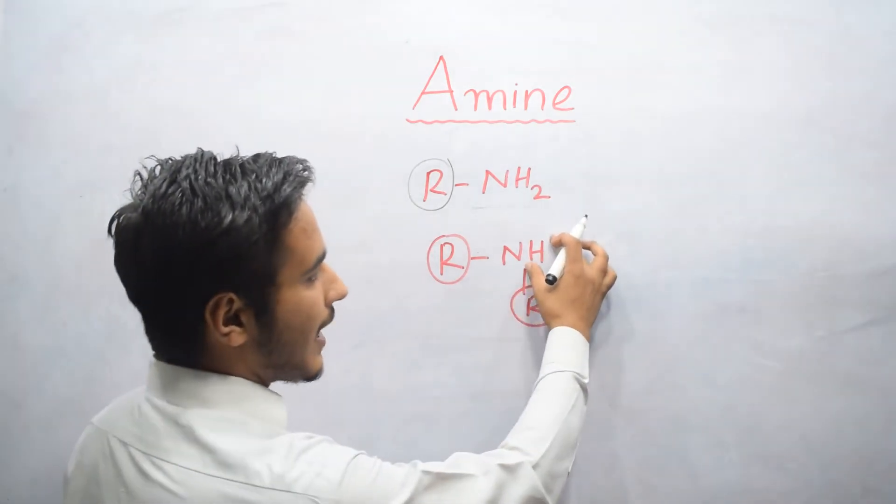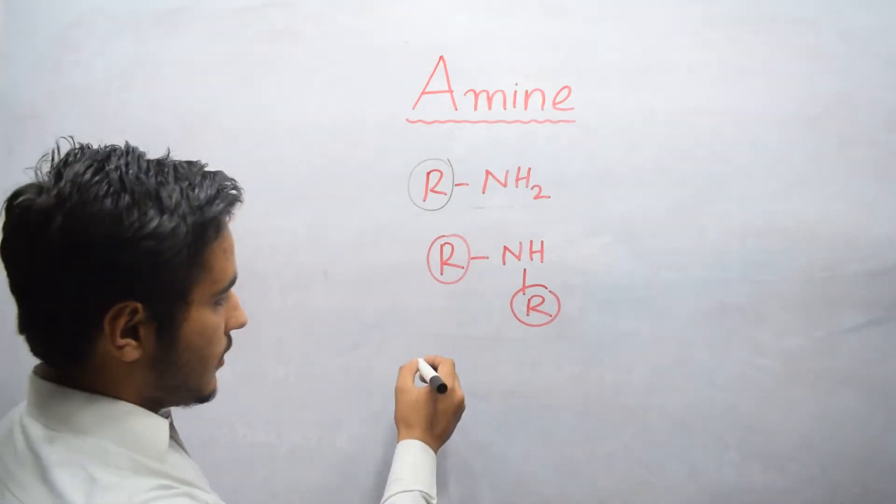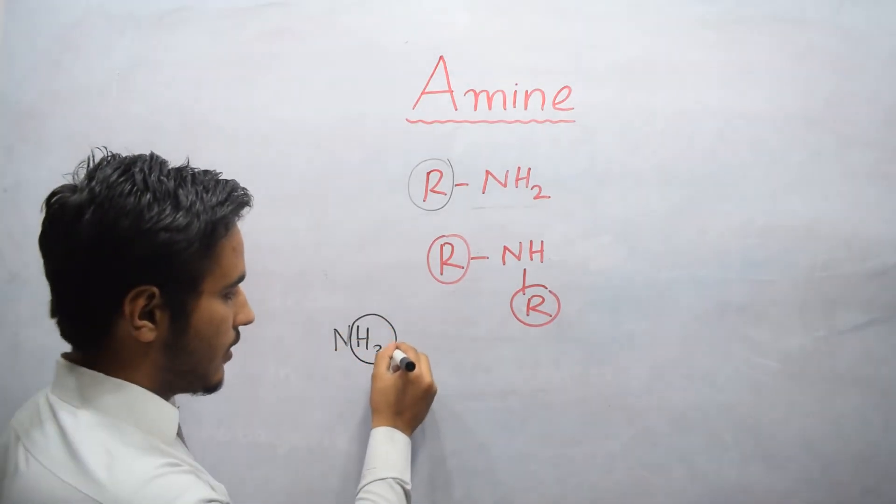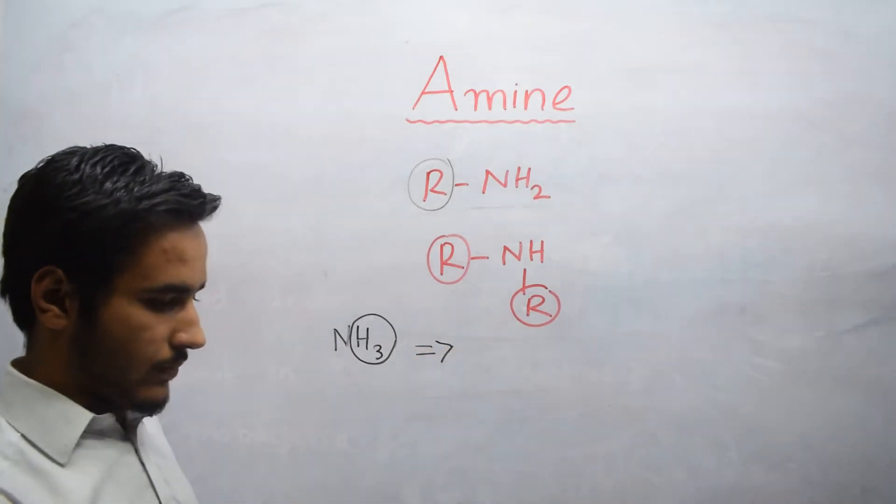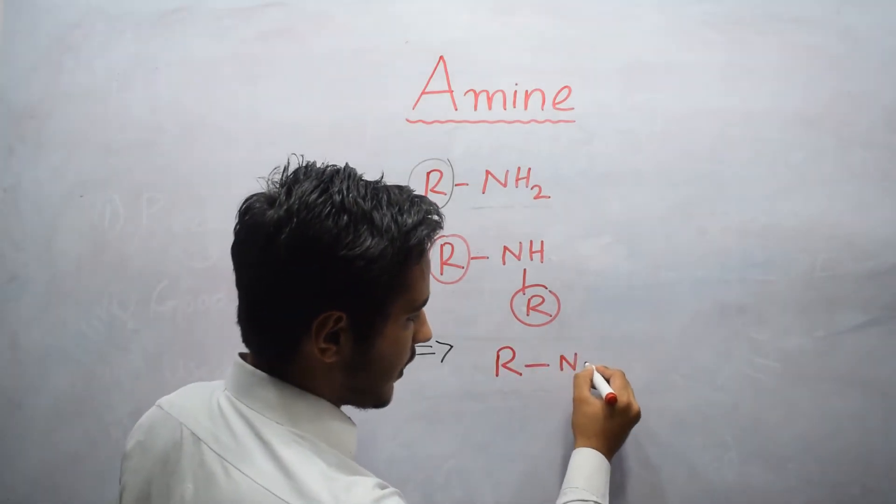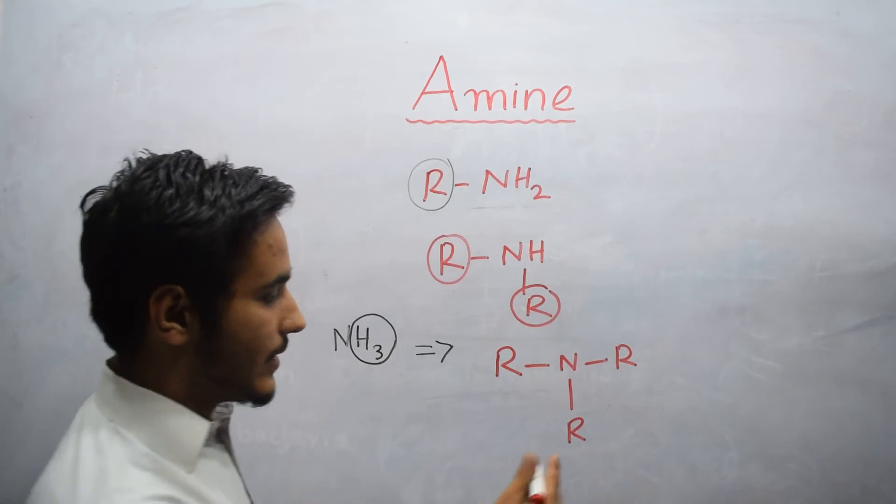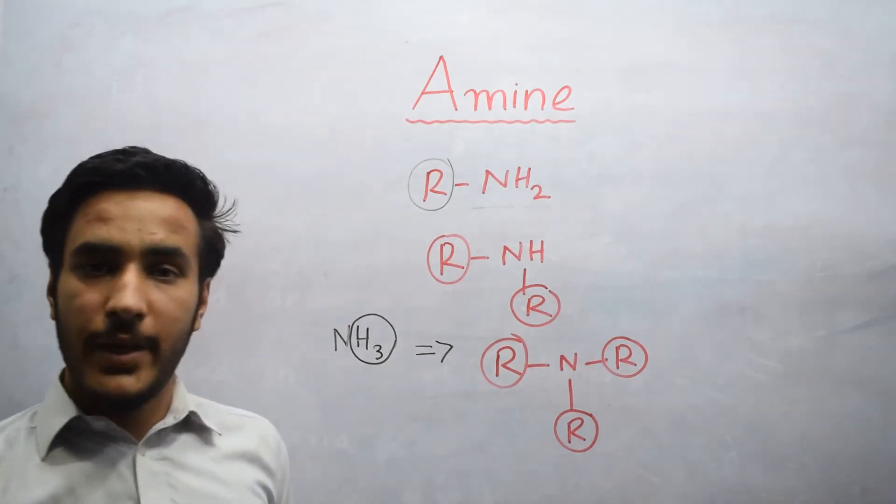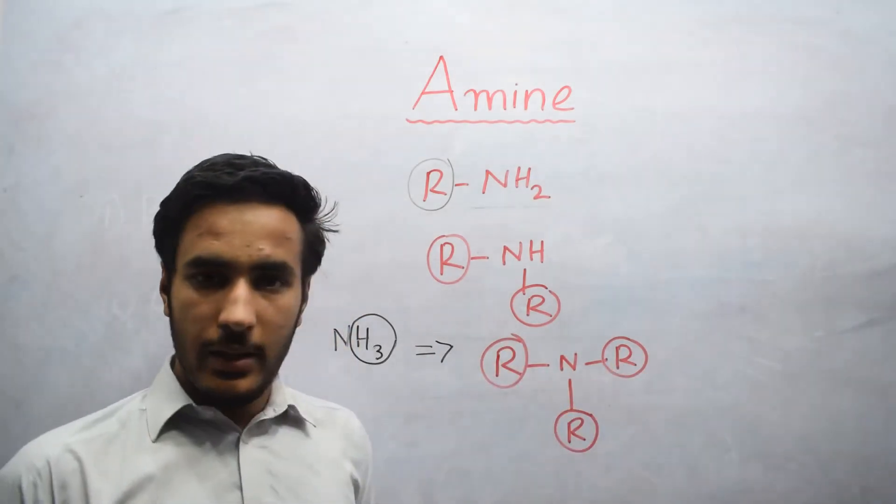Now if we remove the third Hydrogen by Alkyl group, we will get Tertiary Amine. This we have NH3. And we remove all three Hydrogen by three Alkyl groups. So we will get a compound like this. R, which is Alkyl group, bonded with Nitrogen, bonded with Alkyl group, and bonded with Alkyl group. So in this case, we have three Alkyl groups bonded with the main central atom Nitrogen. So this compound is known as Tertiary Amine because here we have three Alkyl groups.